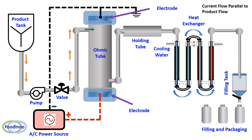Liquid product is first pumped from the product tank to the ohmic tube, and the heated liquid is then passed to the holding tube. Hot product is then passed to the heat exchanger for cooling, and the cold product from the filling tank is then filled into the bottle. In the case of cold filling, the process should be aseptic; otherwise hot filling is necessary.